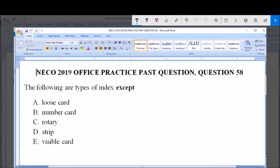The following are types of index except: A. Loose card, B. Number card, C. Rotary, D. Strip, and E. Visible card.